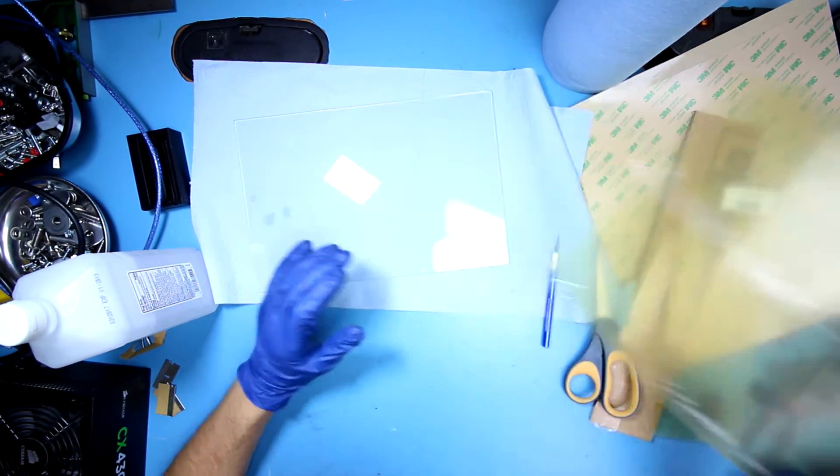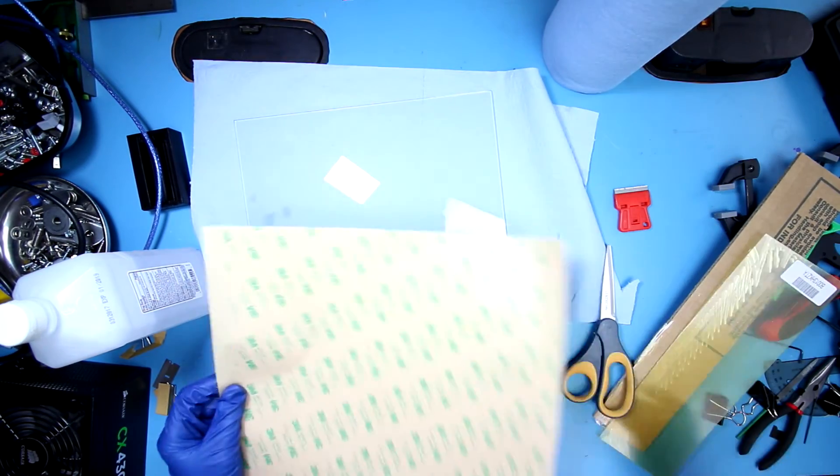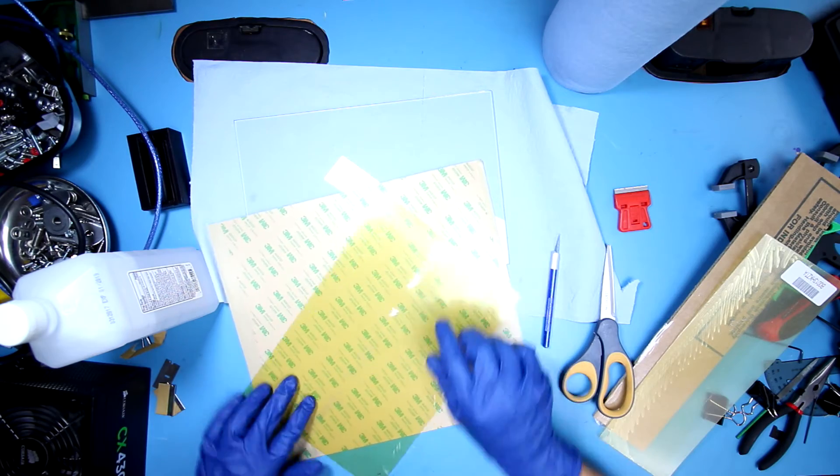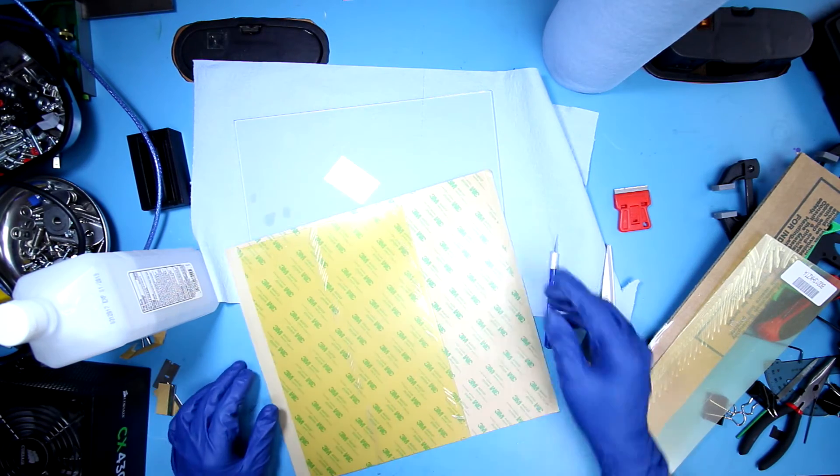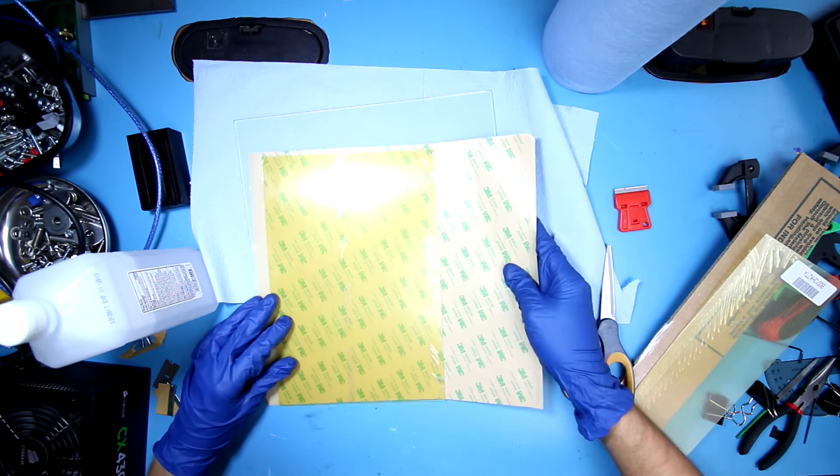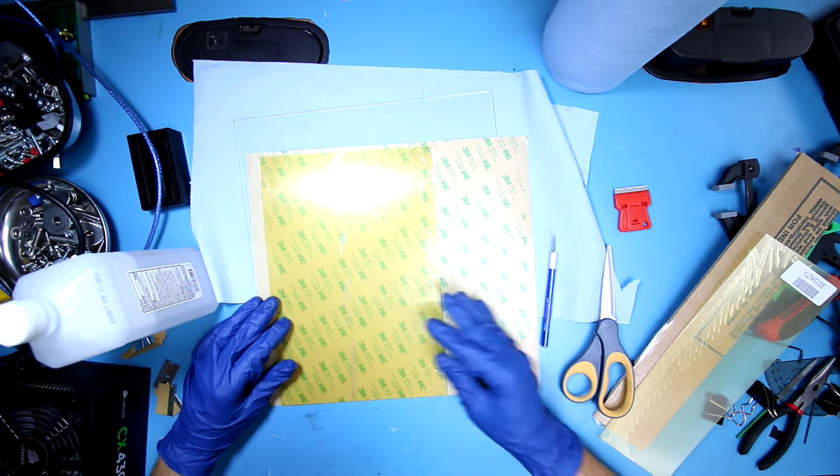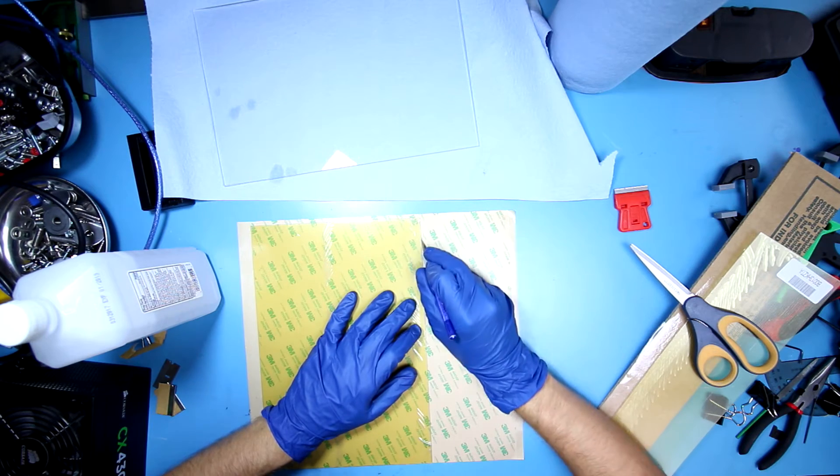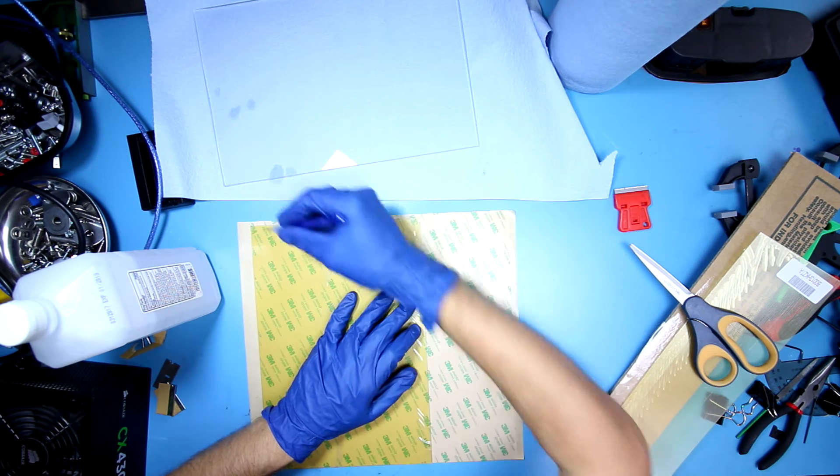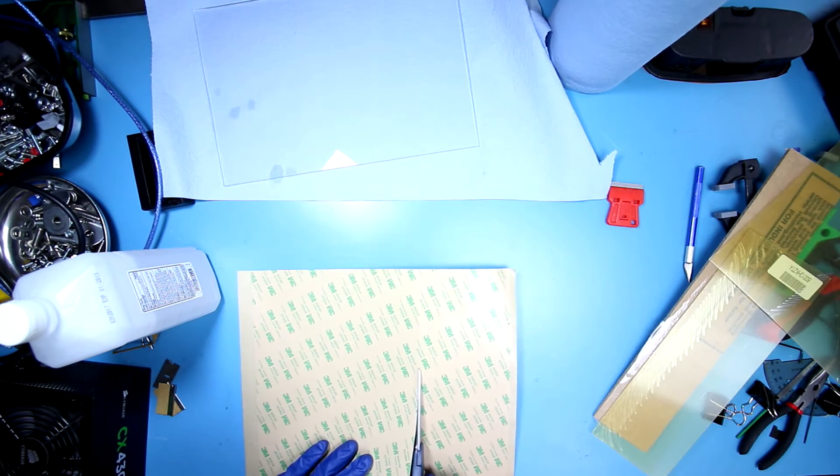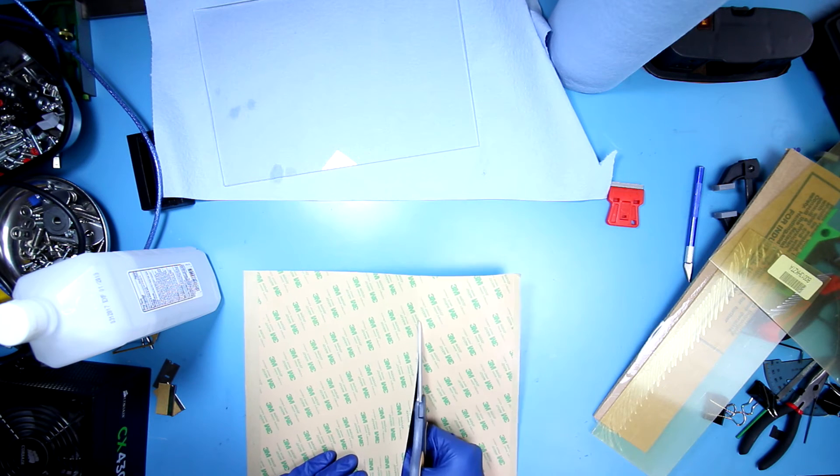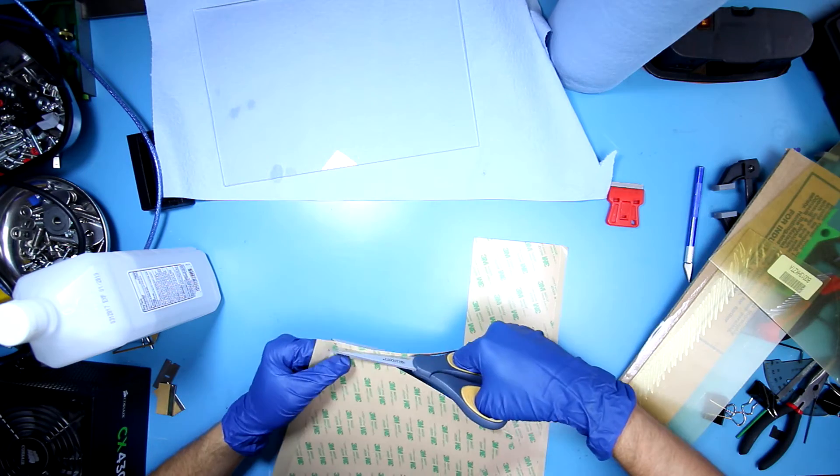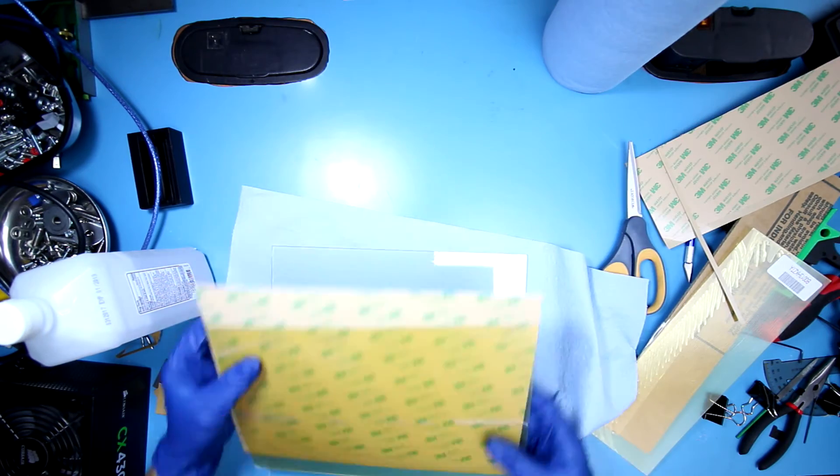We got our sheet ready to go. Let's go ahead and get our adhesive 468 MP sheet prepped. You want to get this exactly the same size as our PEI, don't have too much overlap or else things are just going to get messy. I'm just going to do a light little score and finish it up with the scissors.